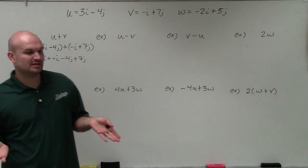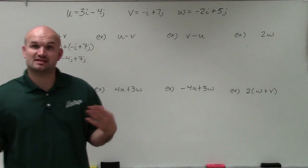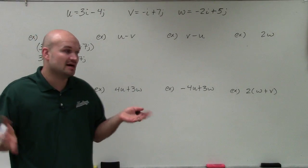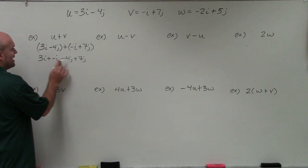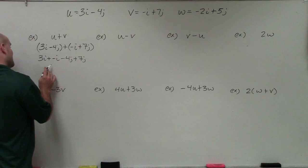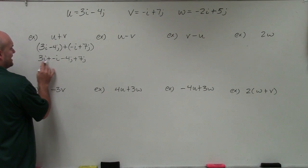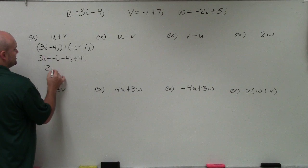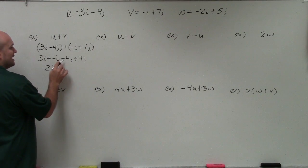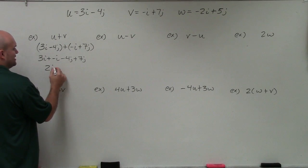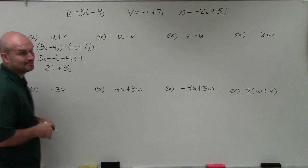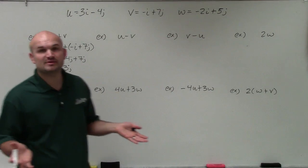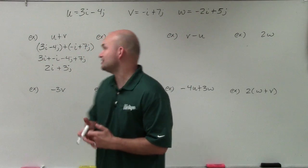Treating i's and j's like variables when adding and subtracting polynomials: 3i plus negative i gives you 2i, and negative 4j plus 7j gives you a positive 3j. That is going to be what we call our resultant vector.